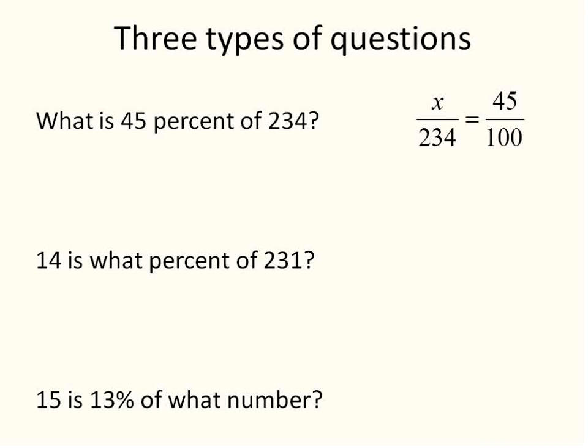So here's how we would set up the first question: What is 45% of 234? The whole number goes in the bottom. The unknown value for this one would be x and would be in the top, that's the part. What part out of 234 is 45%? 45 over 100, our percent over 100. For our second question, 14 is what percent of 231? We have 14 and 231, our part and our whole. What we're missing in this one is our percent. So this type of question is actually much easier solved using proportions.